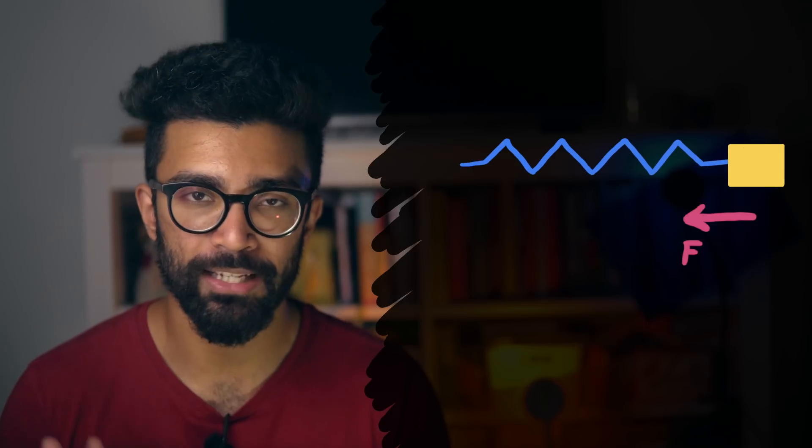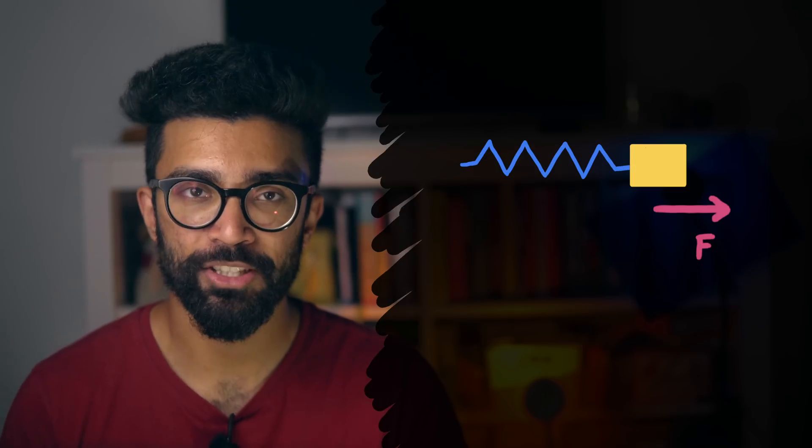Anyway, so we have this mass on a spring and let's imagine that our system is in outer space. So the only force that is acting on any part of this system is the force of the spring. Also to keep things simple, let's imagine that the mass of the spring is small enough that we can basically ignore it compared to the mass of the block. Now we decide to pull the spring from its equilibrium position and let it go. What happens?